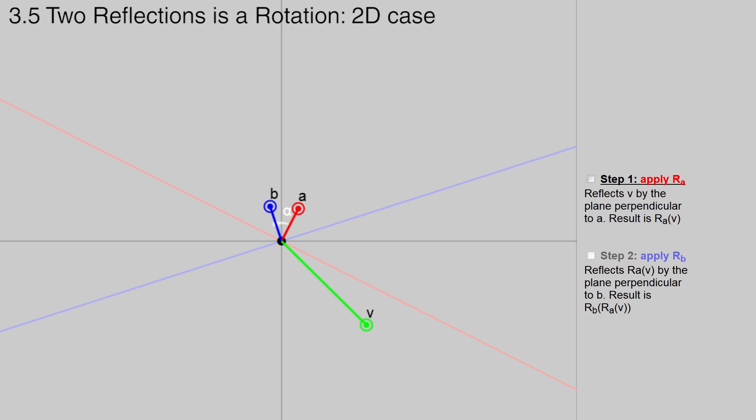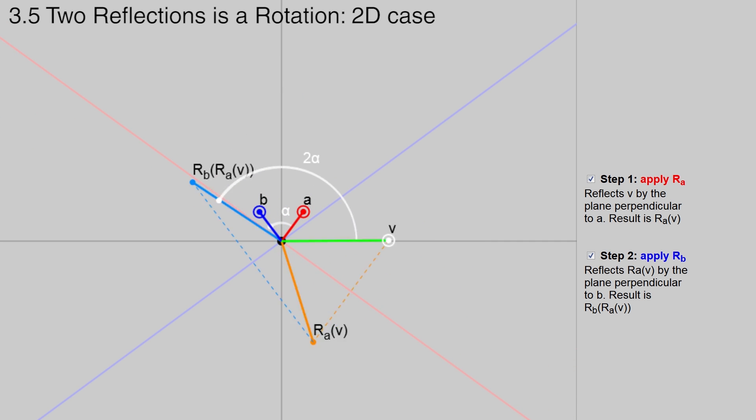It turns out that if we apply two successive reflections to v, using vector a followed by vector b, we get a rotation by twice the angle between the vectors a and b. You can play with this diagram in a linked article.